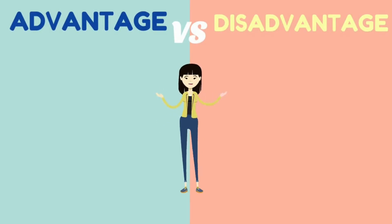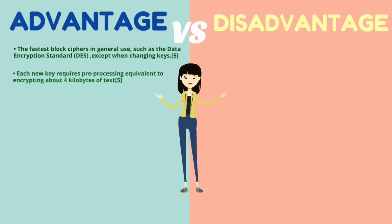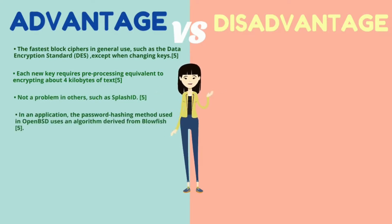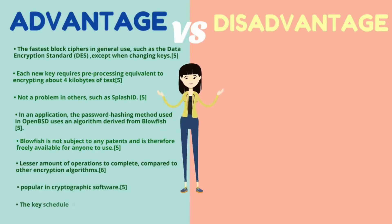An advantage of Blowfish is that it is one of the fastest block ciphers in general use, such as compared to DES. Except when changing keys, each new key requires pre-processing equivalent to encrypting about 4 kilobytes of data, which is very small compared to other block ciphers. This is used in certain applications and is actually a benefit in others, such as the password hashing method used in OpenBSD, which uses an algorithm derived from Blowfish that makes use of the slow key schedule. Blowfish is not subject to any patent and is freely available for anyone to use. It also has a lesser number of operations to complete compared to other encryption algorithms, contributing to its popularity in cryptographic software. The long key schedule can also be advantageous as brute force attacks become more difficult.